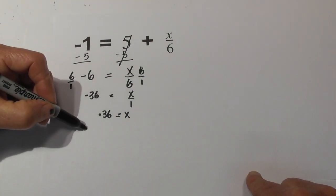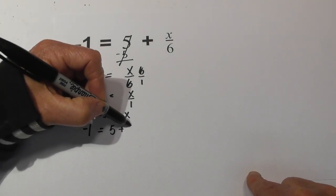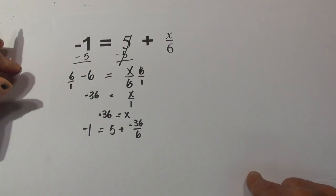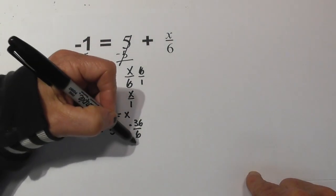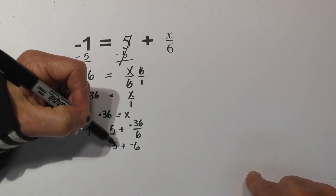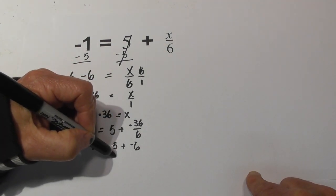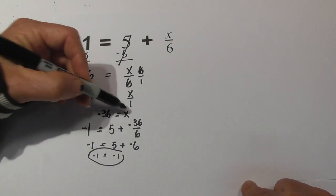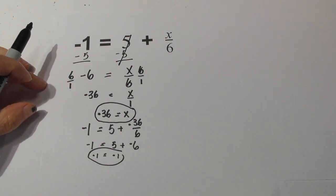Now let's plug it into the original formula. We have negative 1 equals 5 plus negative 36 over 6. So I need this side to equal negative 1. Negative 36 divided by 6 is negative 6 plus a positive 5 equals negative 1. And 5 and negative 6 does indeed equal negative 1. So the original answer, let's go back to that. x equals negative 36.